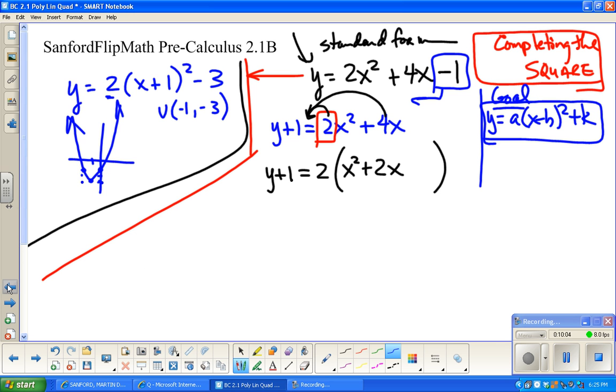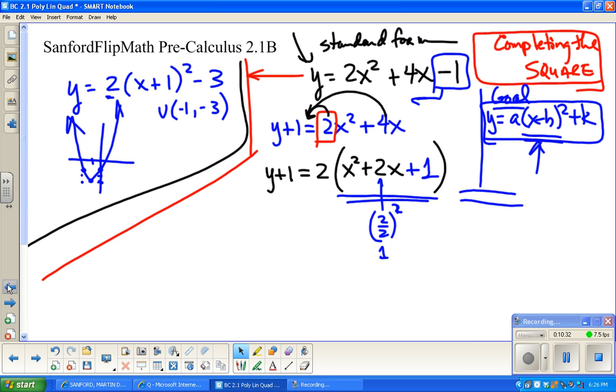So now, this is where I want that square to be. This is what I'm going to do what I just did on the other slide. Half of 2, and then I'm going to square it. Well, half of 2 is 1, squared is 1. Now, here's where the fun begins. Here's the problem: I just stuck something there that wasn't there already and I can't just do that. I have to balance things.